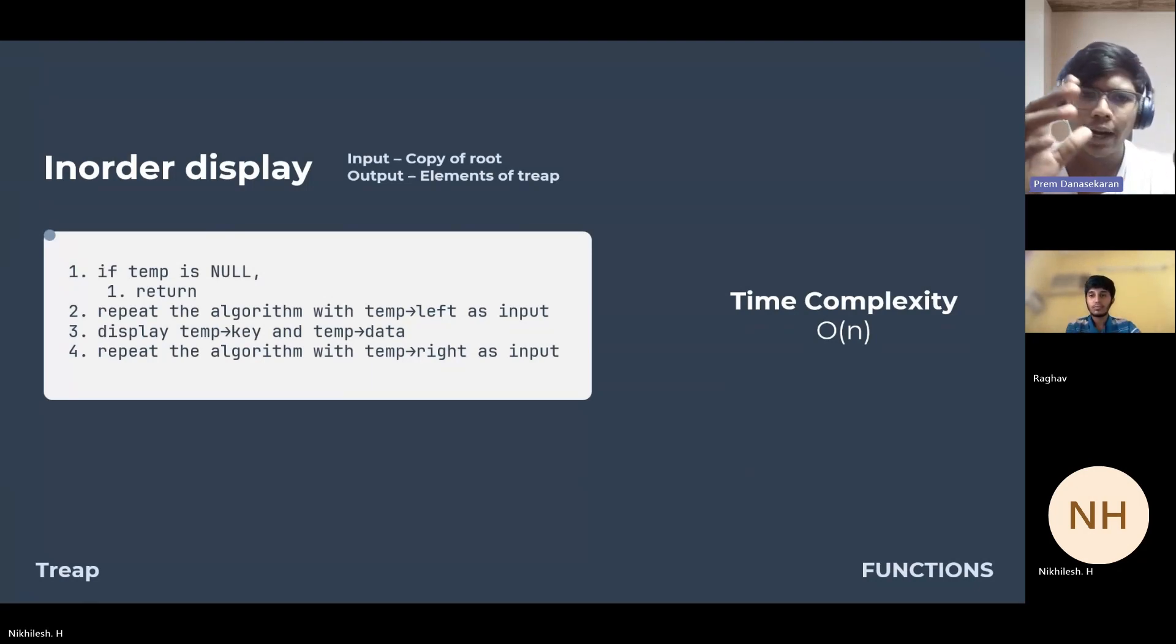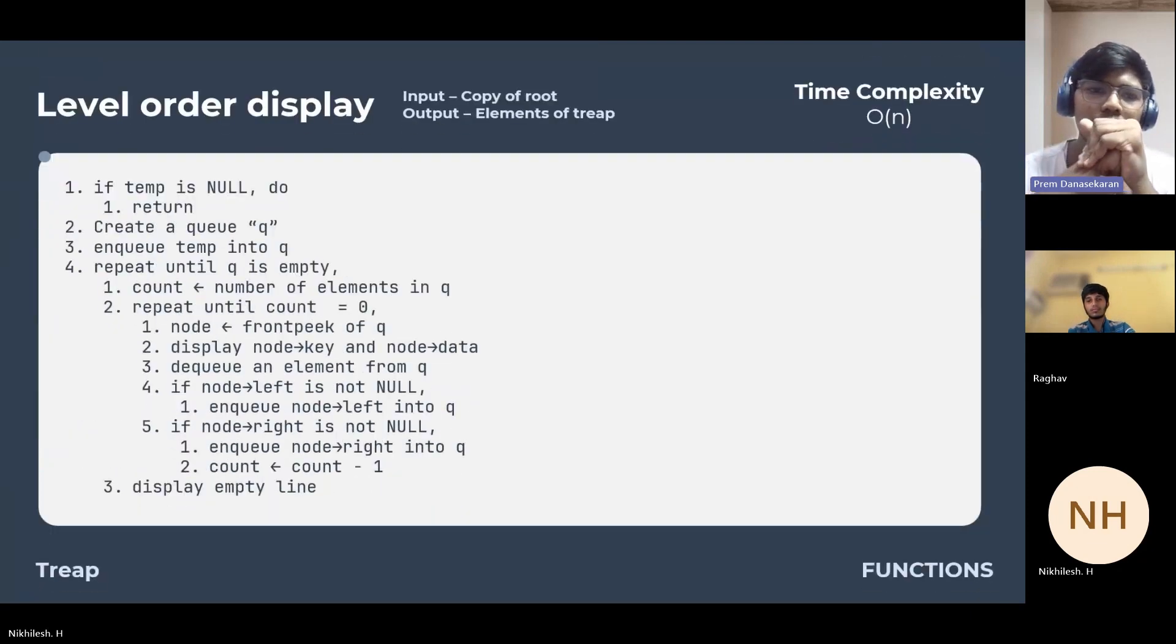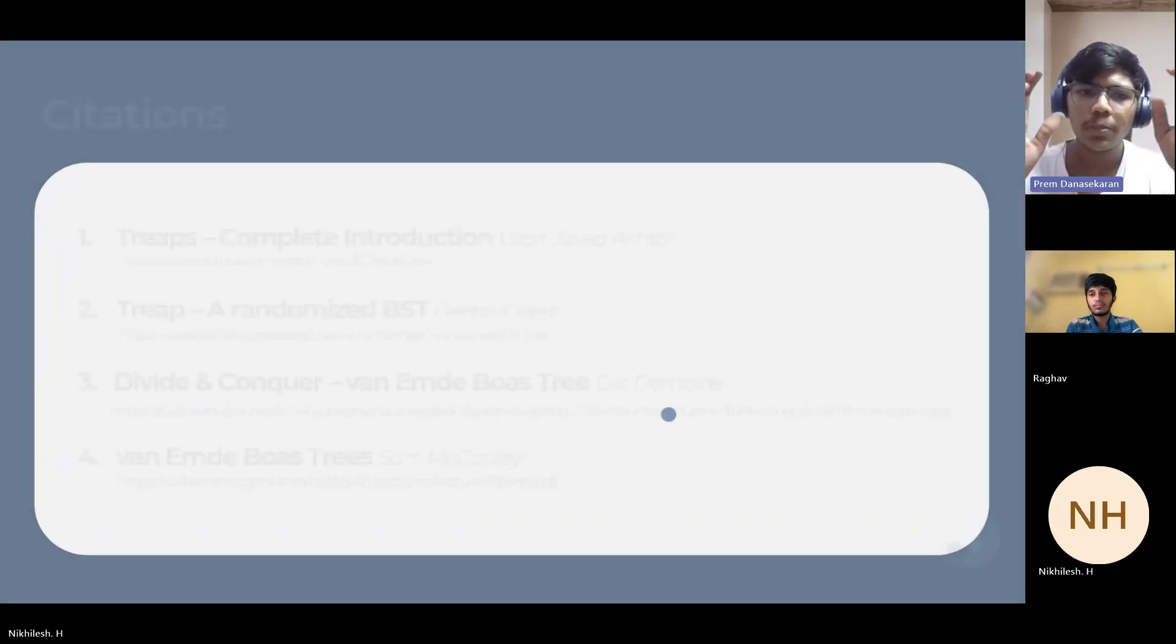Level-order traversal visits each level of the tree from top to bottom, left to right, exploring the nodes at each level before moving to the next. It utilizes a queue structure to efficiently process the levels, enqueueing the child nodes as they are encountered and dequeueing the parent node once the children have been visited. This traversal strategy ensures that the nodes are processed in the order of breadth, facilitating operations like breadth-first search. This operation has time complexity O(n). This entire structure is based on space complexity O(n).